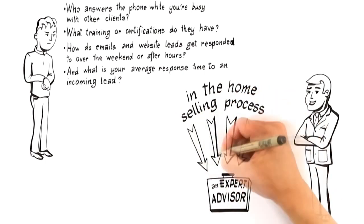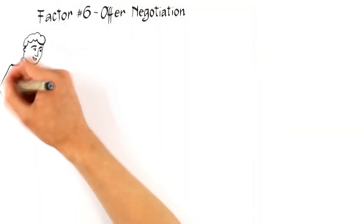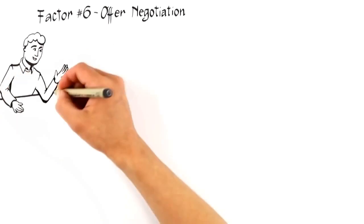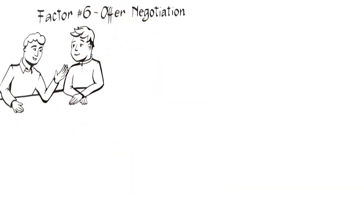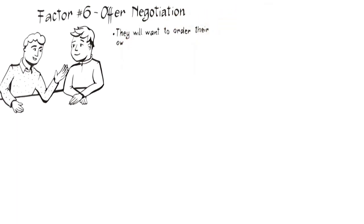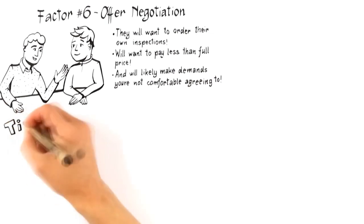Alright, the next to last factor that influences the likelihood you get top dollar for your home is factor number six, offer negotiation. Regardless of how well a home is positioned to attract the perfect buyer, they will want to order their own inspections, will want to pay less than full price, and will likely make demands you're not comfortable agreeing to. Therefore, not enough can be said then about hiring an expert who can negotiate an outcome that serves your best interests.